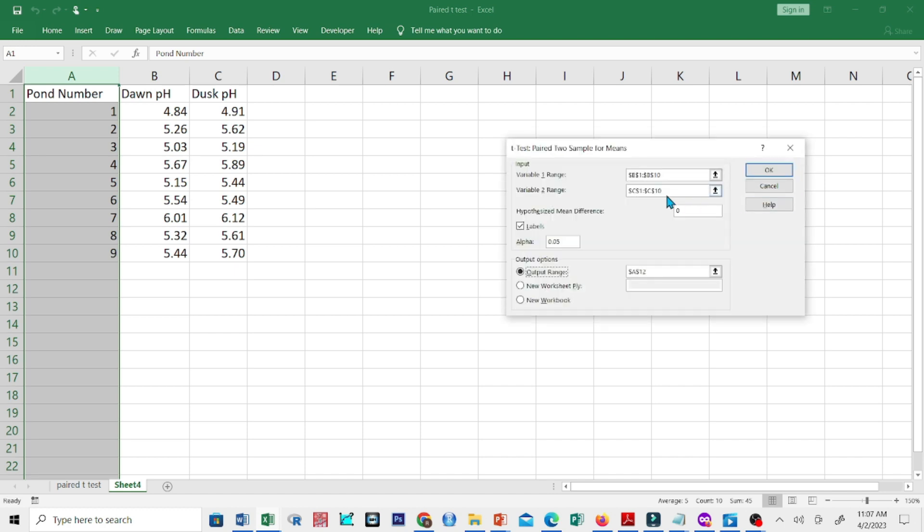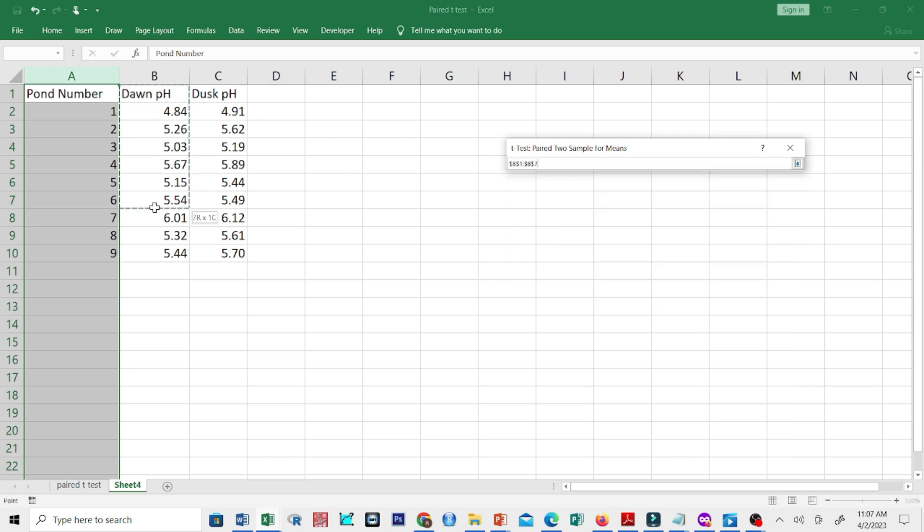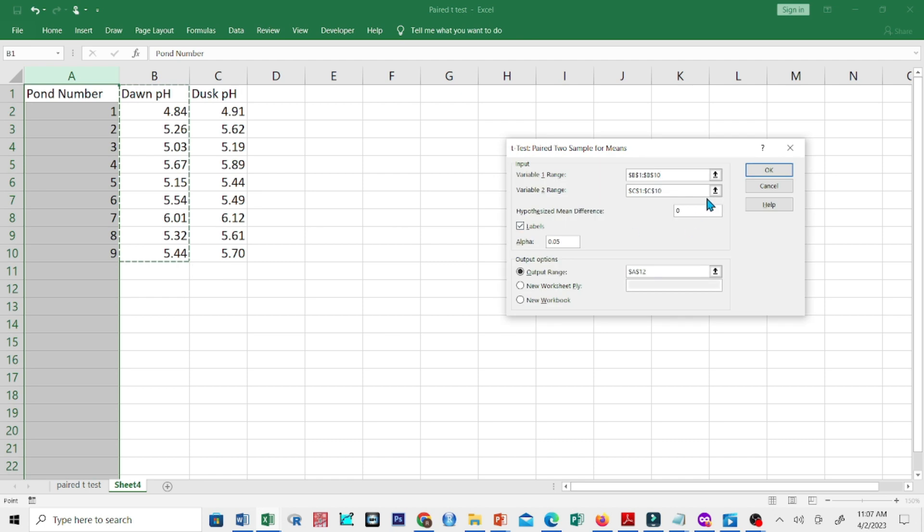Click OK. Then let us select the inputs for the first variable, in this case, let us choose the pH at dawn. And for the second variable, let us select the pH at dusk. Let us put 0 as our hypothesized mean difference, tick labels, and set 0.05 as our level of significance.